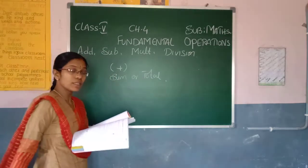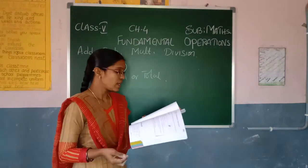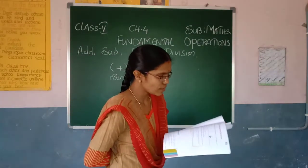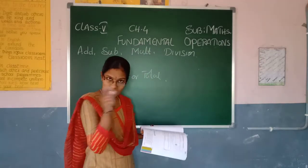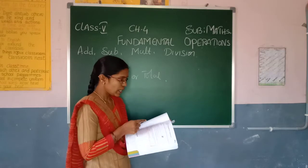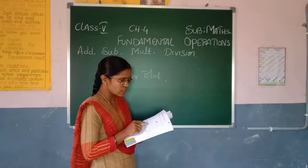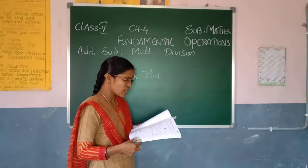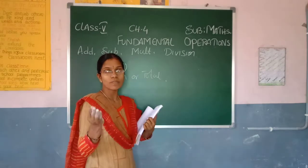If you add zero to any number, the number will remain itself. Next, if you change the order of the numbers while adding, the value will be the same. Addition of two, three, or four digit numbers is done by arranging the digits according to their place values — ones, tens, hundreds, thousands, etc.